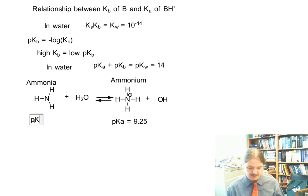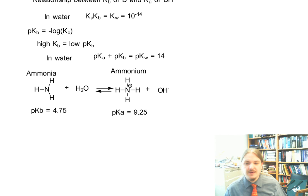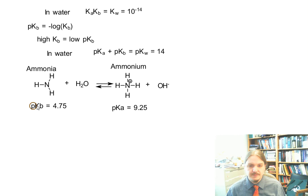That means that we can estimate or we can calculate the PKB of ammonia as 14 minus 9.25, which is 4.75. There we go. Just checking one more time. Yep. 4.75, 9.25.